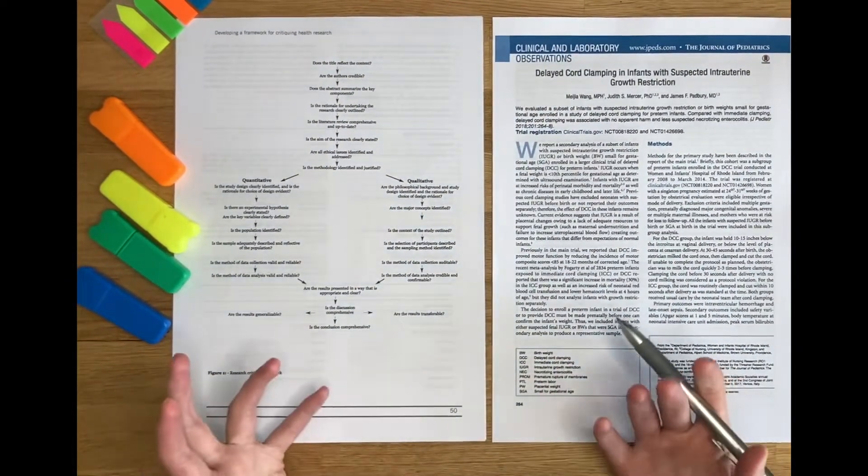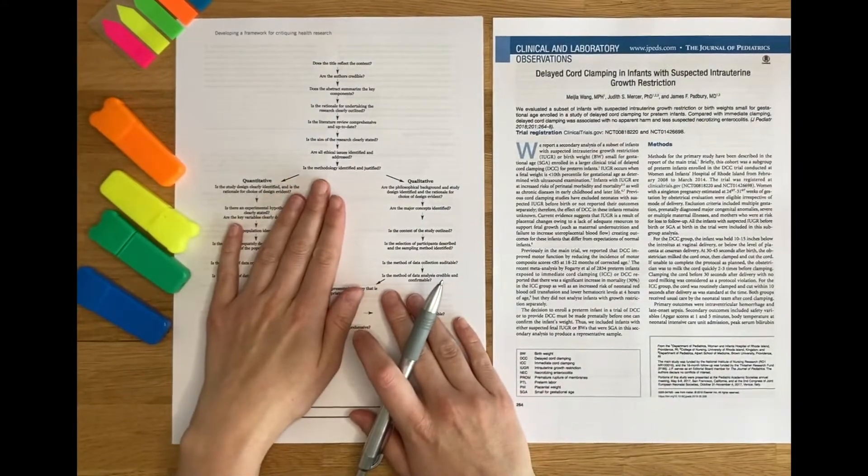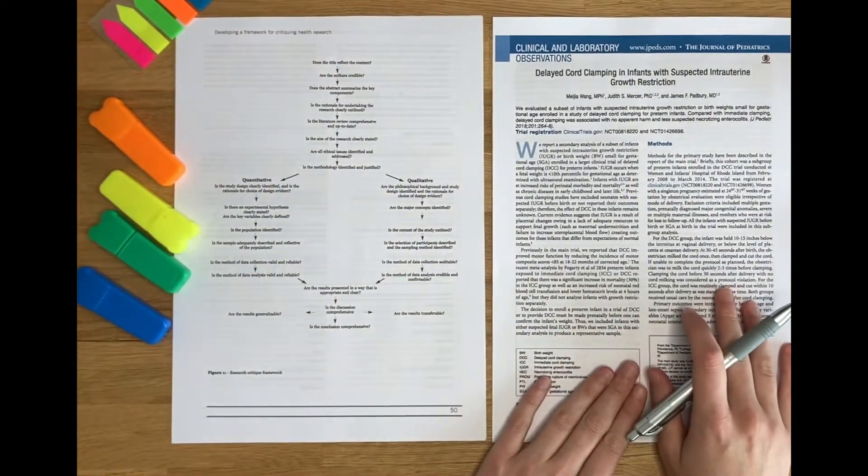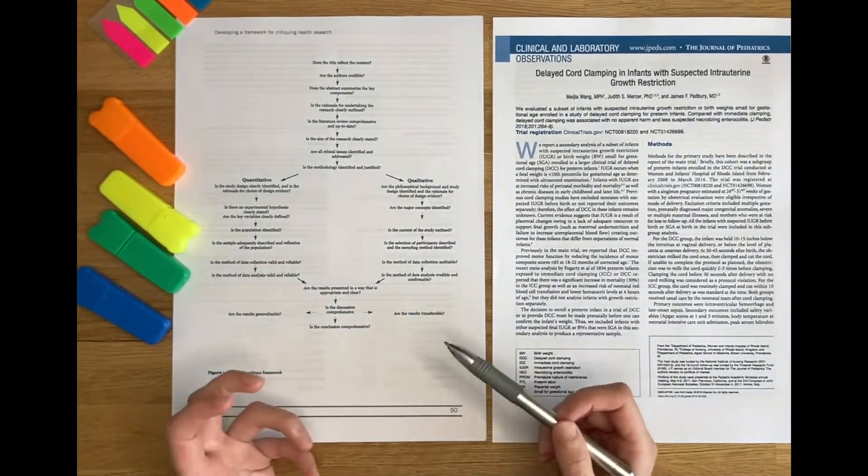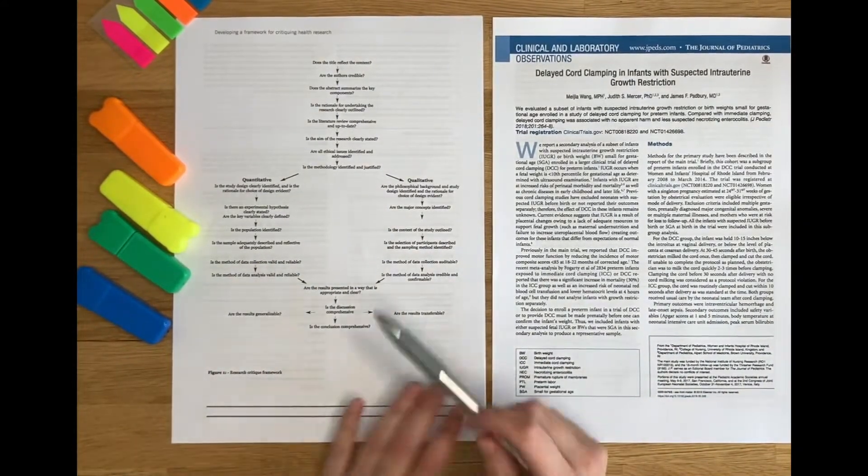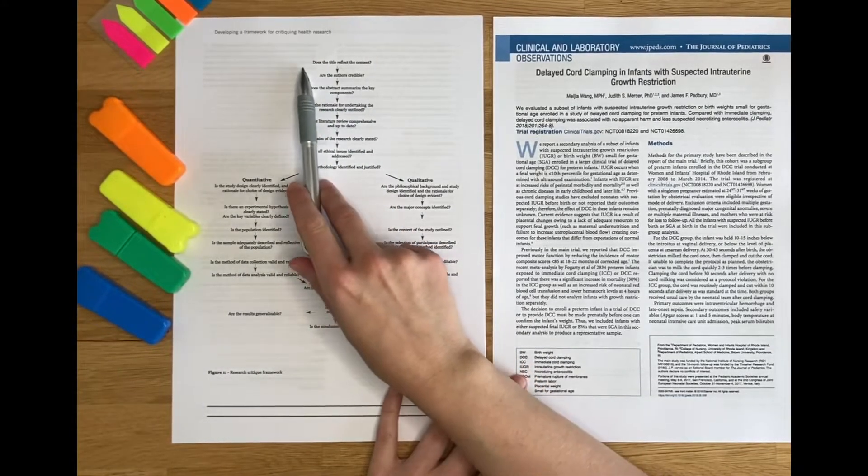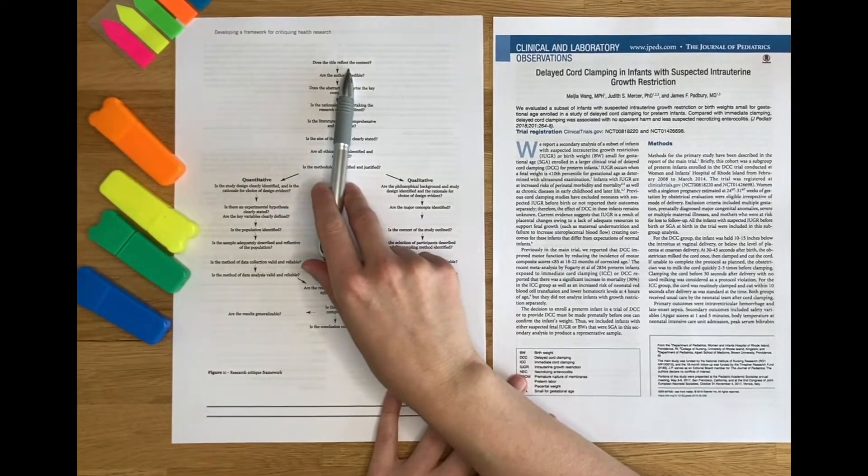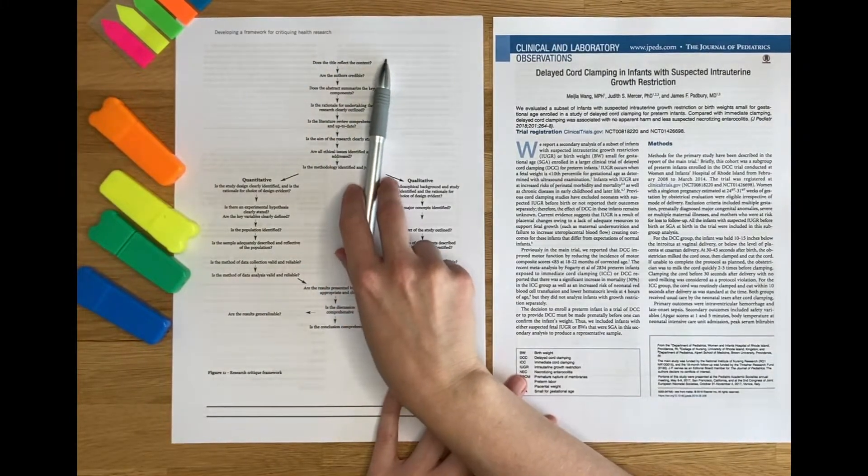So to begin the critique, what I need to do is pick out the information that's on the framework in the paper. And I'm going to do this by working through the framework from the start, so in a logical manner. I'm going to ask myself the questions. For example, does the title reflect the content? So I know from this question that the key information I need to pick out here is the title.